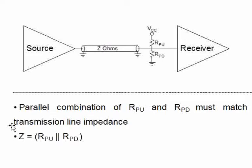If you see here the selection of pull-up and pull-down must be done such that because these two are in parallel, the parallel combination of these two must be equal to the characteristic impedance of the line. Z is nothing but the parallel combination of these resistors. So that's how you select resistors.